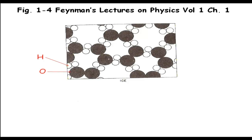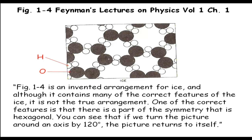Now, let us read Feynman's text. Figure 1-4 is an invented arrangement of ice, and although it contains many of the correct features of ice,